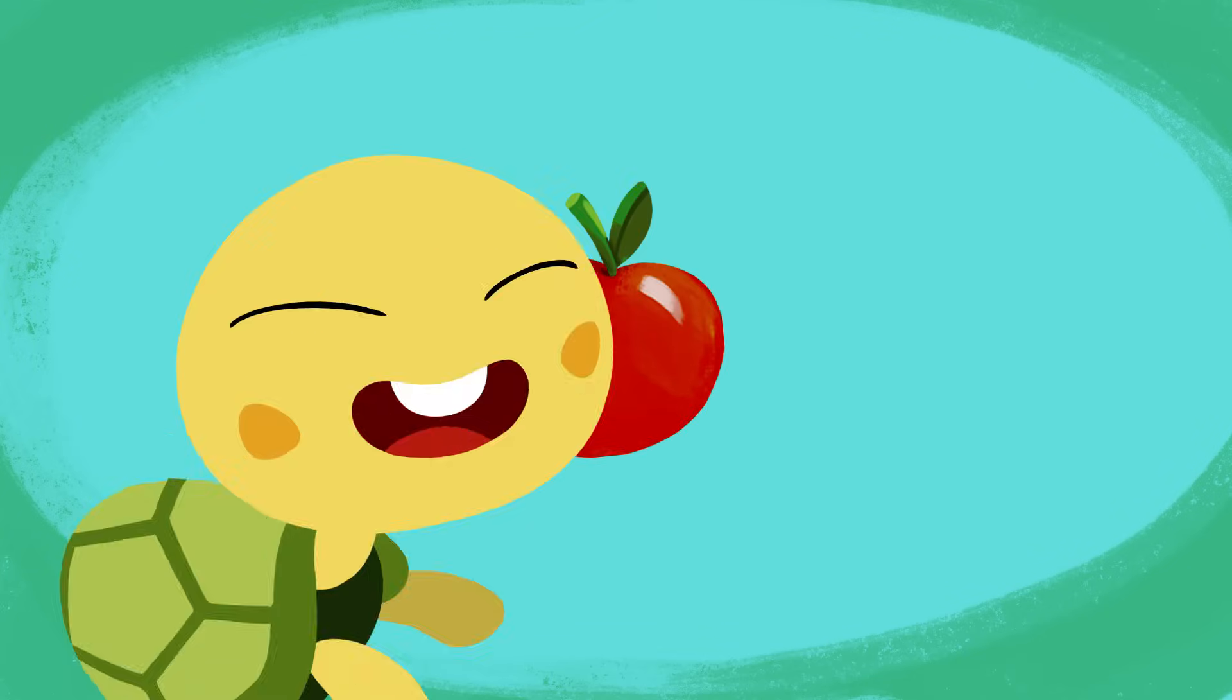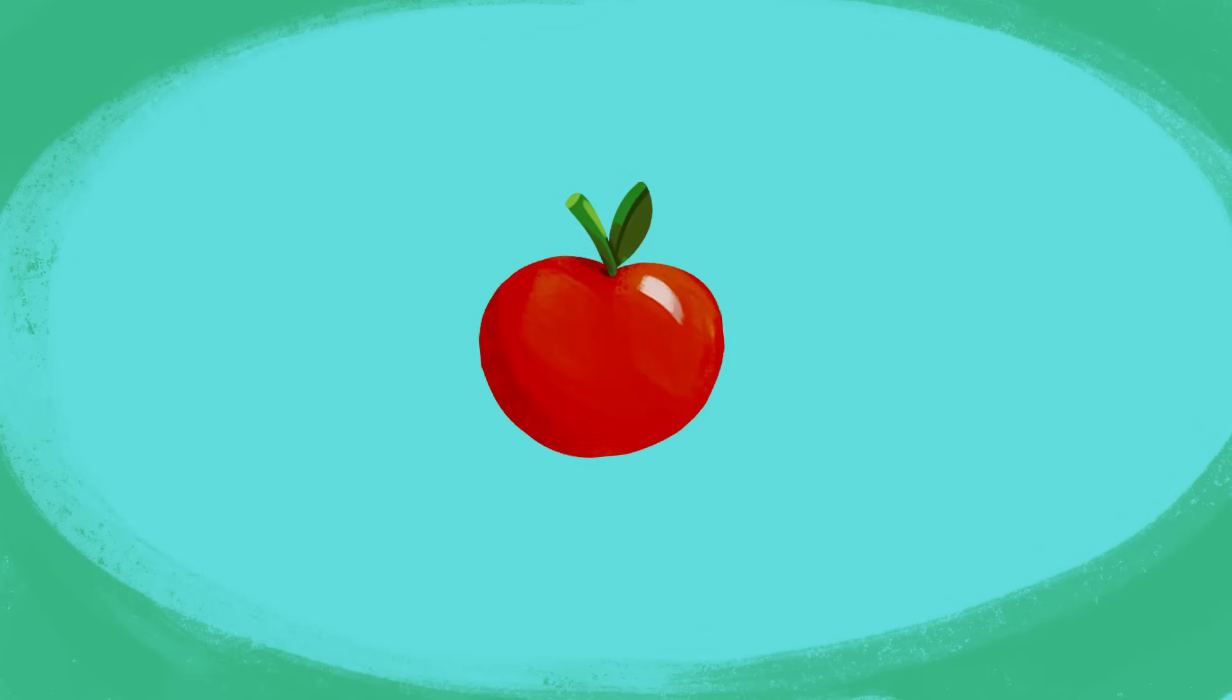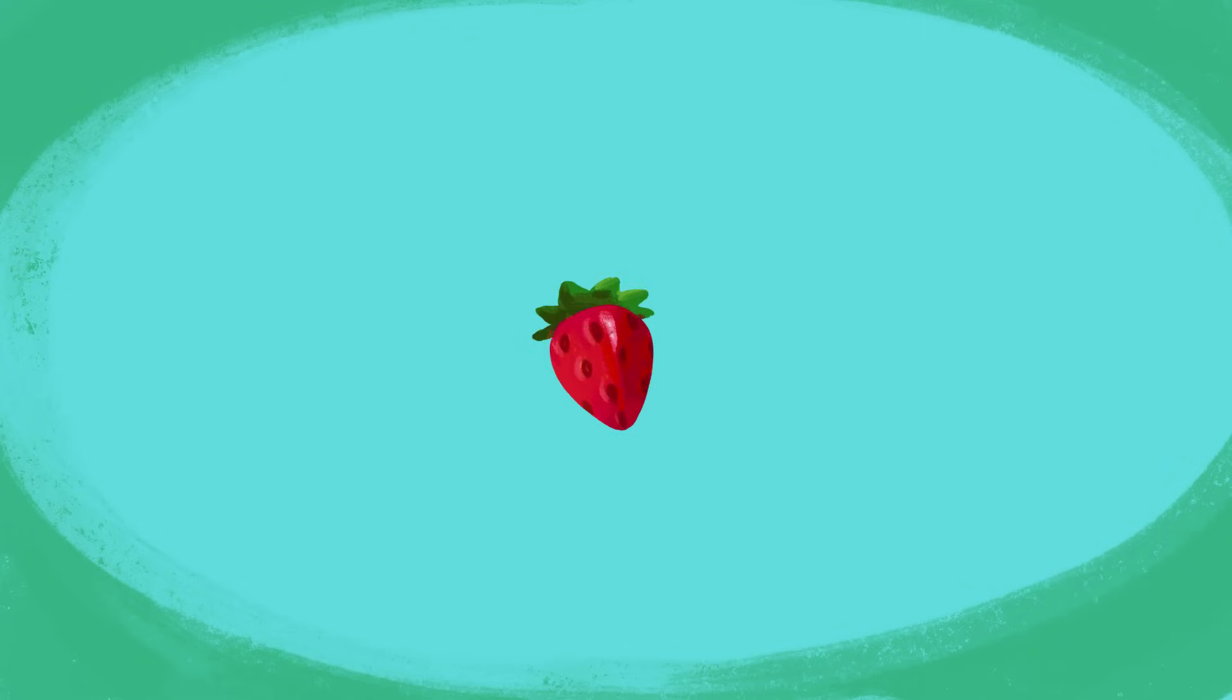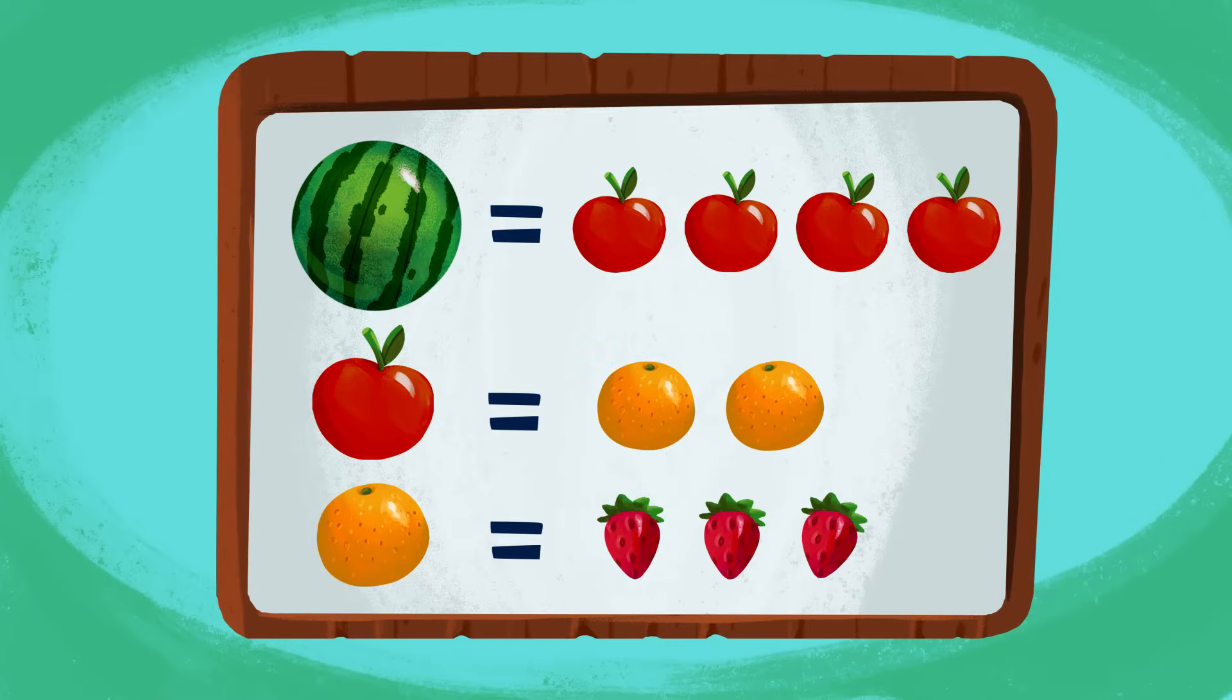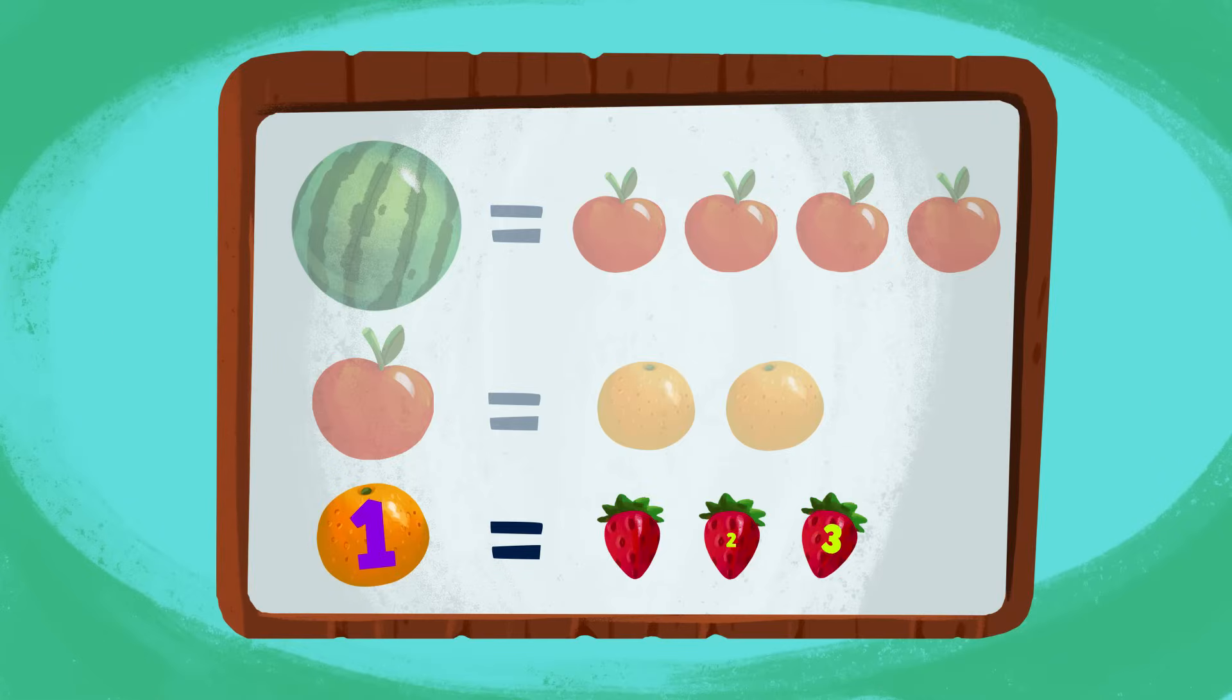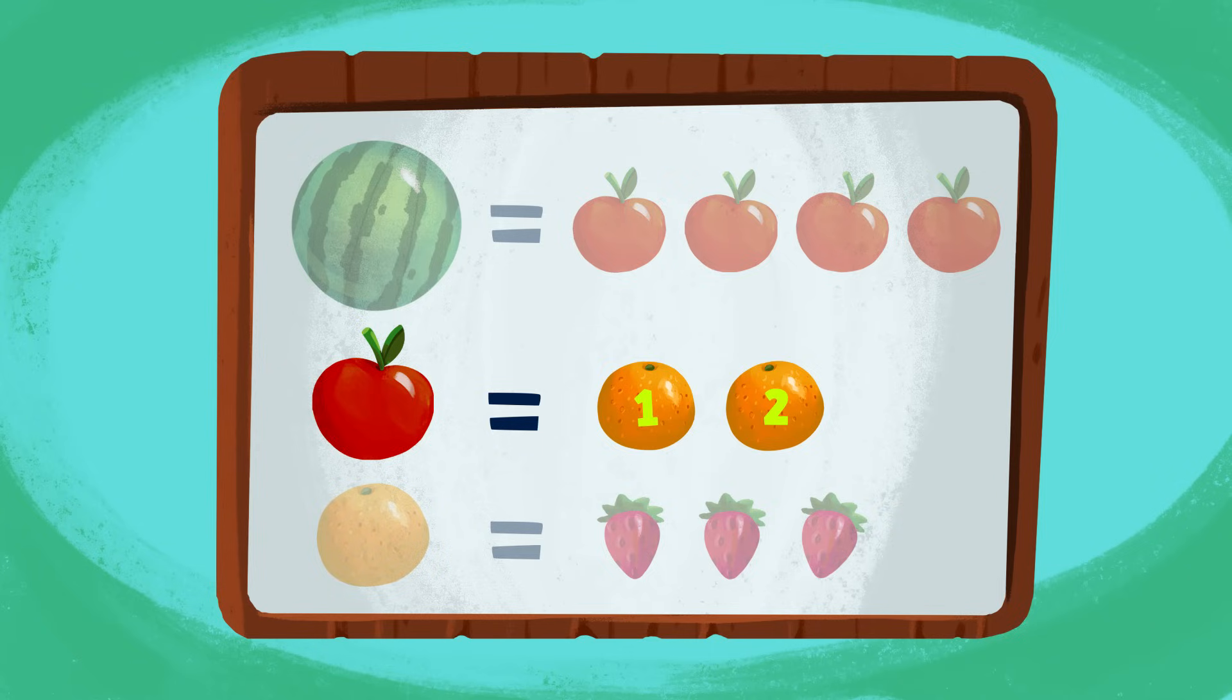Bip has one apple! Bip wants to swap his apple for some strawberries! But how many strawberries can Bip get for his one apple? Let's see if we can figure it out! We know Bip can get three strawberries for one orange! And we know Bip can get two oranges for one apple!